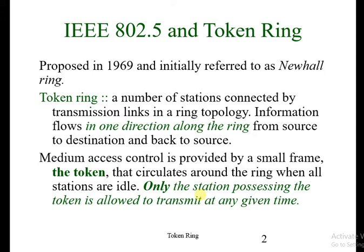Medium access control is provided by a small frame — the token — that circulates around the ring when all stations are idle. Only the station possessing the token is allowed to transmit at any given time.